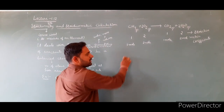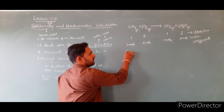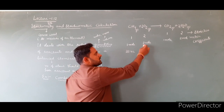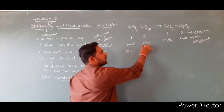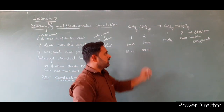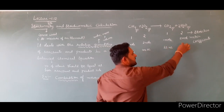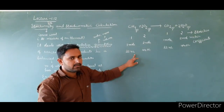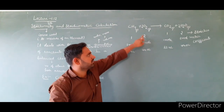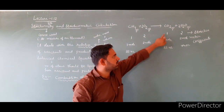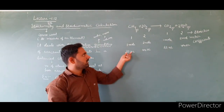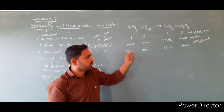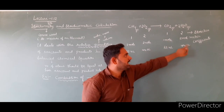One mole is equal to 22.4 liters. Two moles is equal to 44.8 liters (2 × 22.4). So 22.4 liters of methane reacts with 44.8 liters of oxygen to produce 22.4 liters of carbon dioxide and 44.8 liters of water.